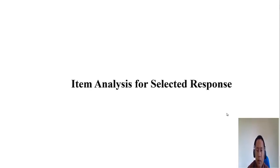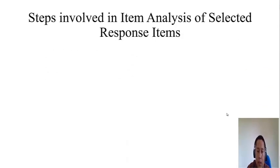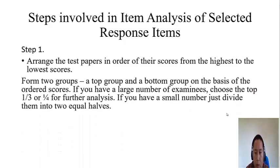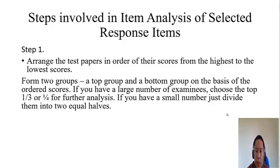An important point: in order to conduct item analysis we need students' answer scripts — item analysis is a post-examination activity. Now we will go through the steps involved in item analysis of selected response items. Step one: arrange the answer scripts in order of their scores from highest to lowest. After arranging in descending order, form two groups. Choose ten students' answer scripts from the top — the high scorers — and name it the top group. Choose ten answer scripts from the bottom — the lowest scorers — and name it the bottom group. If you have a large number of students, you can choose the top one-third or one-fourth and bottom one-third or one-fourth to form the two groups.